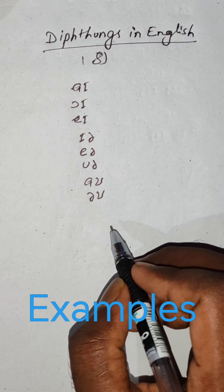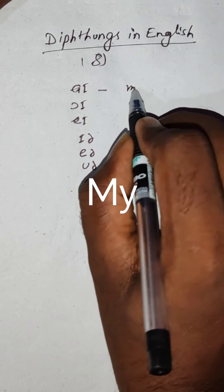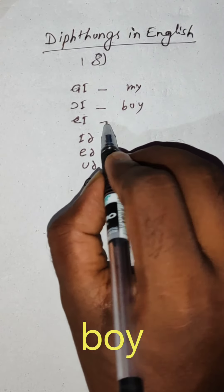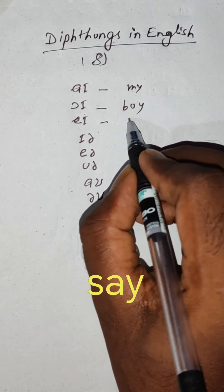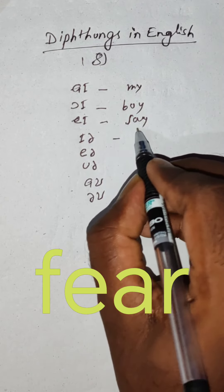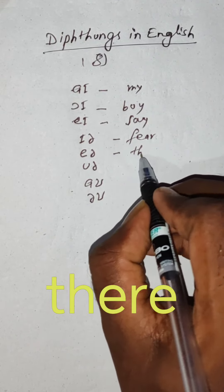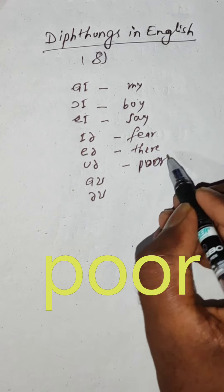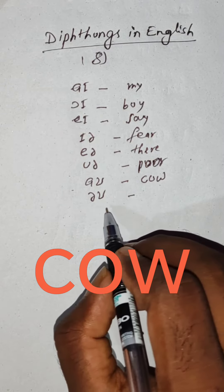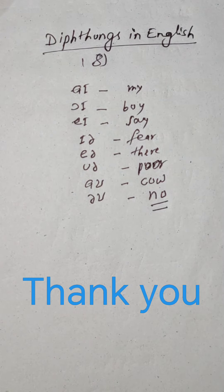If you know the example of these vowel sounds, you can add to your list. For example: 'aai' — you can say 'my'; 'oi' — you can say 'boy'; 'ay' — you can say 'say'; 'ear' — you can say 'ear'; 'air' — you can say 'there'; 'oo' — 'poor'; 'aau' — you can say 'cow'; and 'aau' — you can say 'no'. Thank you very much for watching.